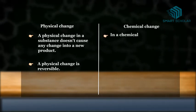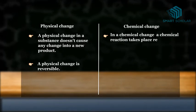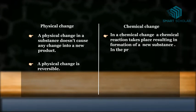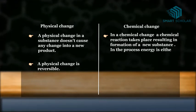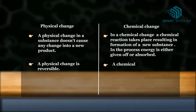In a chemical change, a chemical reaction takes place resulting in formation of a new substance. In the process, energy is either given off or absorbed. A chemical change is irreversible.